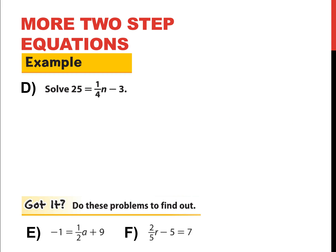So let's tackle some more two-step equations. Let's take a look at example D. Let's solve the following two-step equation. 25 is equal to 1 fourth times n minus 3, or 25 is equal to 1 fourth n minus 3. All right, so I'm going to write the equation and circle the side with a variable. That's 1 fourth n minus 3. That's the entire side with a variable.